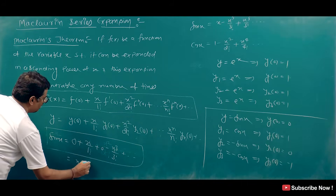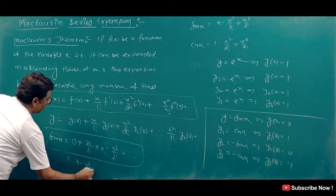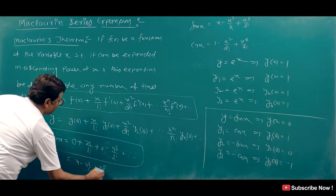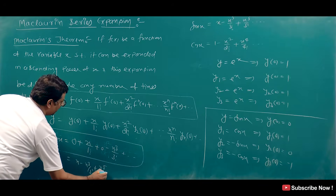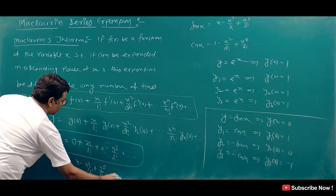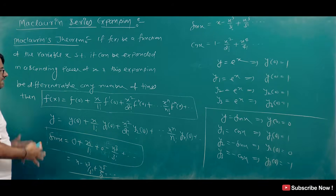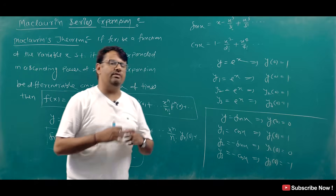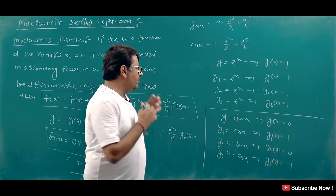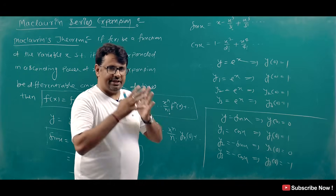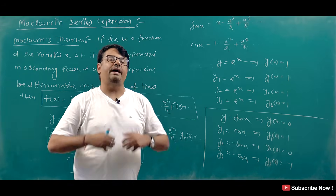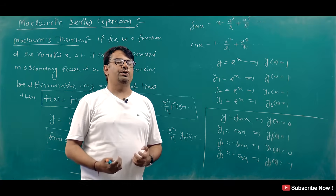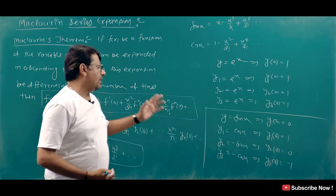We can simplify this. The result is: sin x = x - x³/3! + x⁵/5! — this type of alternating plus-minus series. So this is the type of function. If you forget Maclaurin's theorem by chance in the exam, you can derive it.